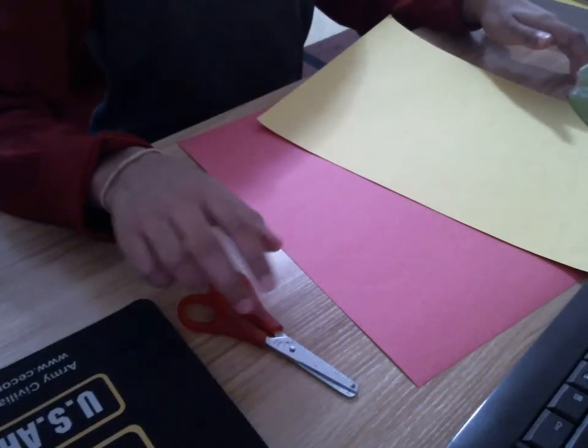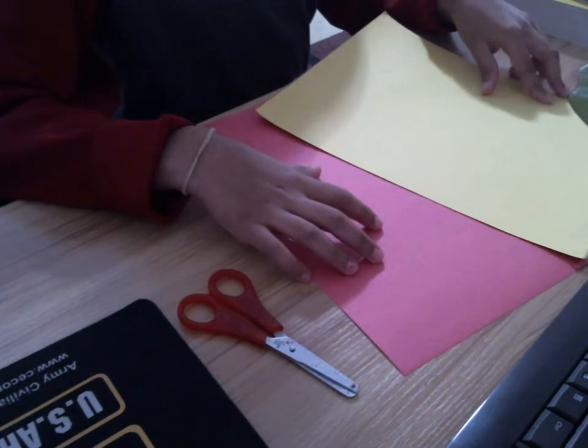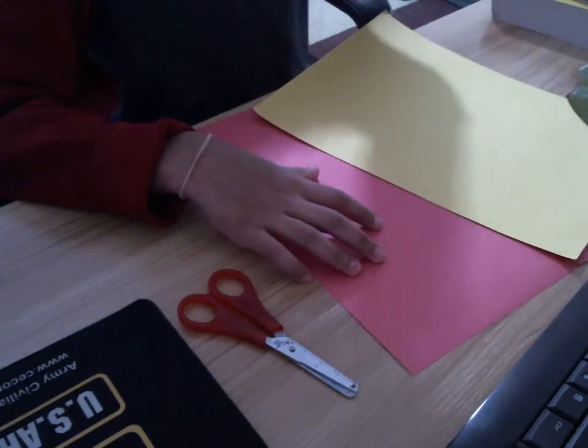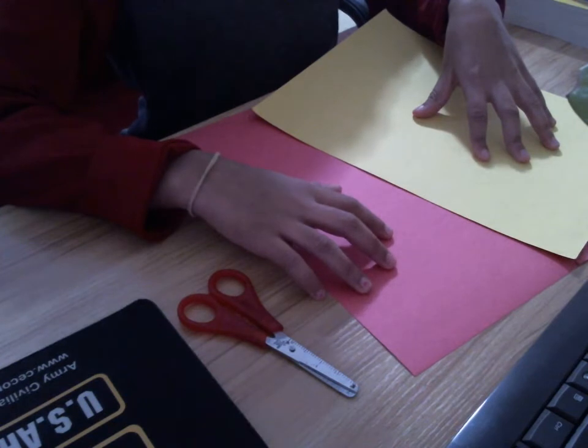Hi guys, today we're going to learn how to make a Harry Potter bookmark. You can use any house or any other colors you want. I'm going to use the Gryffindor colors, red and yellow.